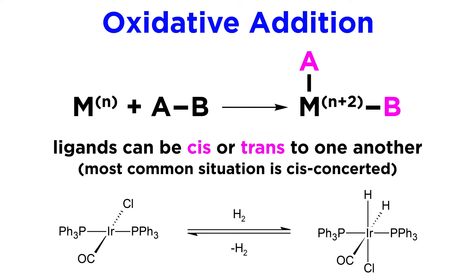The most common situation would be cis-concerted oxidative addition. This is when the two groups end up cis to one another, and the addition occurs all at once in concerted fashion. This is very common for molecular hydrogen as well as carbon-halogen bonds.